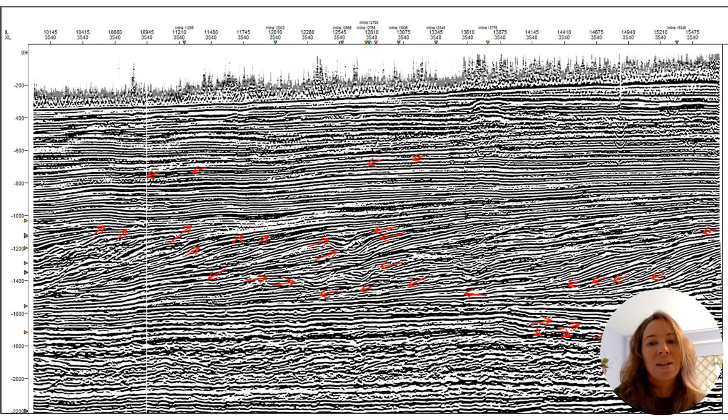With cosine of instantaneous phase, you can more quickly map the toplap, the downlap, and all those other critical termination patterns because they're easier to notice, and in turn it gives us more confidence in our seismic interpretation.